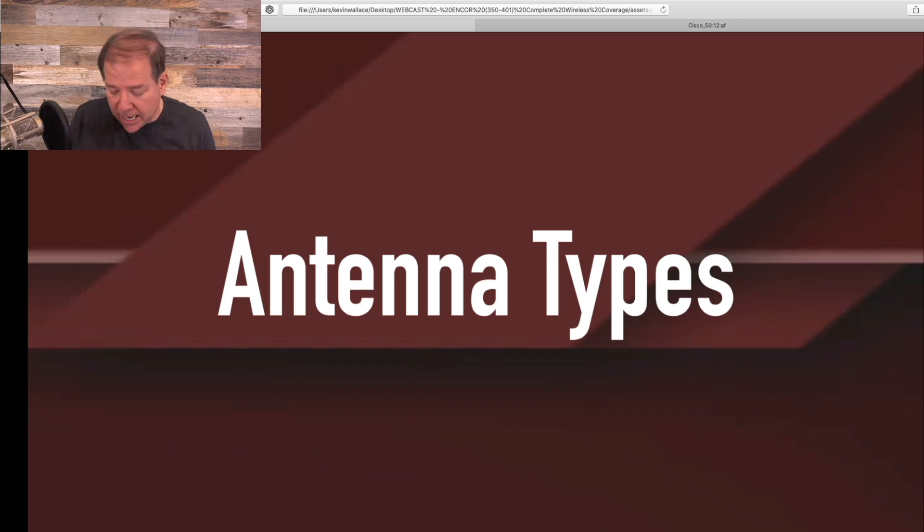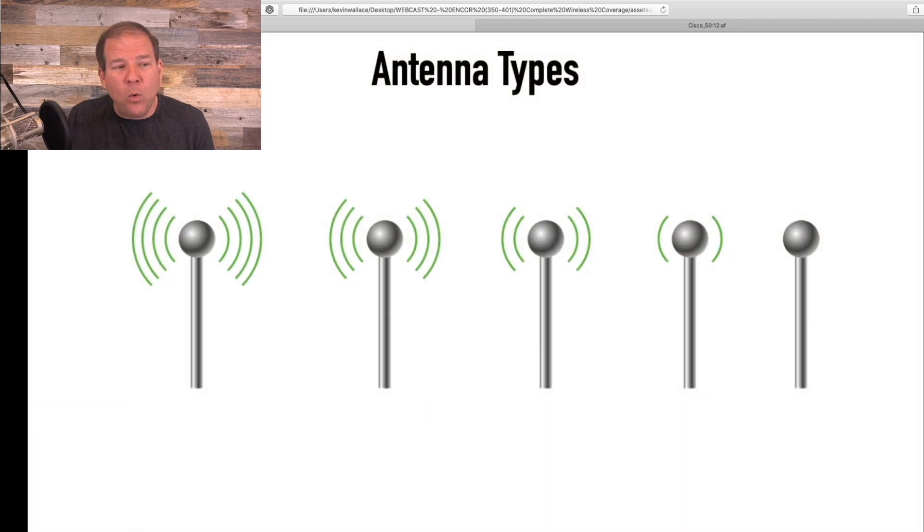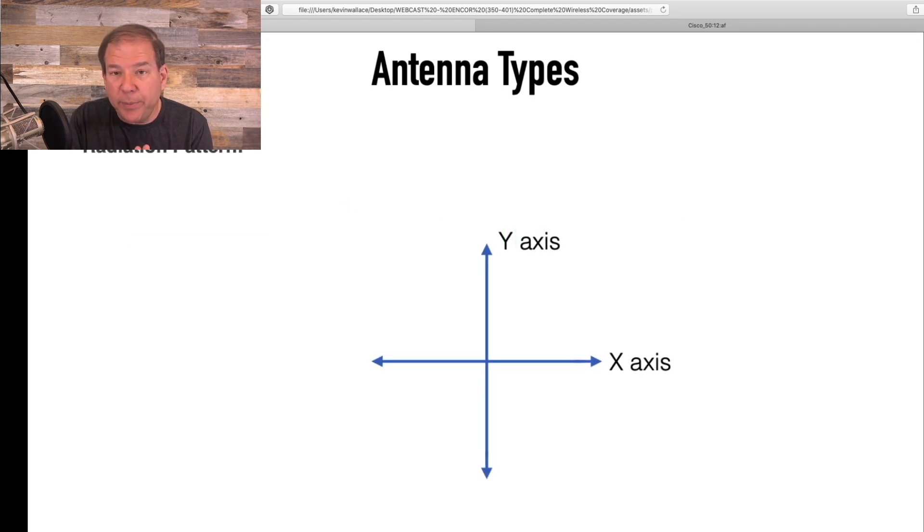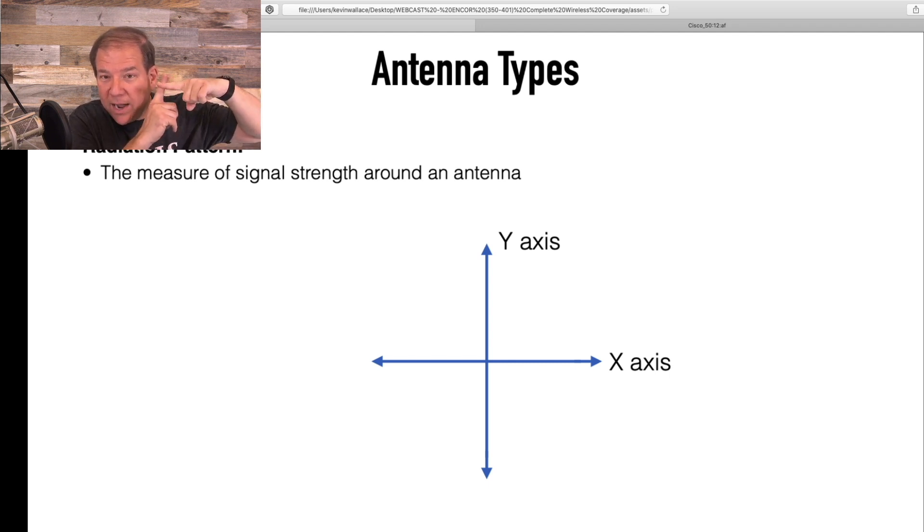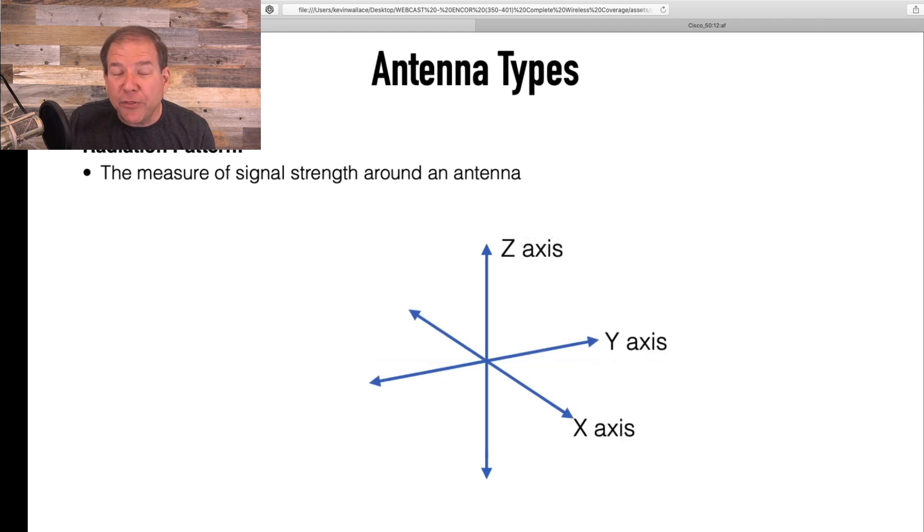Let's talk antenna types, shall we? Because different antennas are going to be used for different applications, and we need to know what to pick. And when we talk about antenna types, we're really concerned with the radiation pattern. We want to be able to visualize what's the coverage area. What area is going to be covered by this antenna? And it's not enough to just visualize it in a 2D X and Y axis. No, we need a third axis. We need to go into three dimensions here.